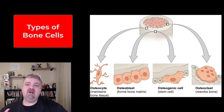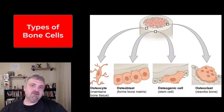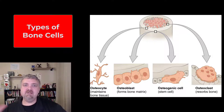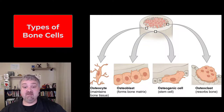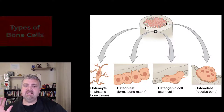Hey everybody, Dr. O here. Let's talk about the four different types of bone cells. Bone cells only make up about 2% of bone tissue. Most of it is going to be your protein collagen and your minerals, especially calcium. But there are four types of bone cells — though I'm going to show you that there are really only two.